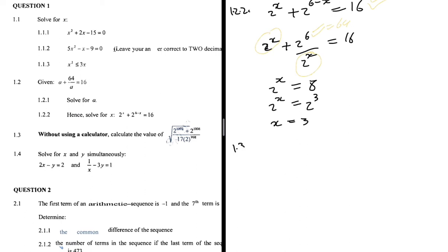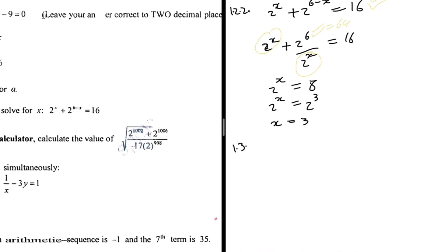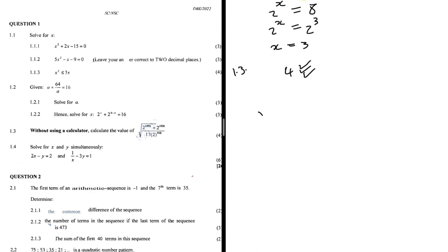Problem 1.3: without using a calculator, calculate the value of the given expression. That expression looks scary, but my strategy is to use the calculator first to see that the answer is 4 — so I know what I'm aiming for. The expression is √((2^1002 + 2^1006) / (17 × 2^998)).